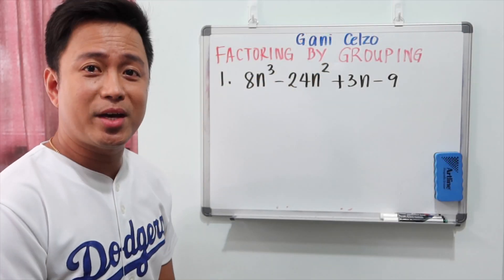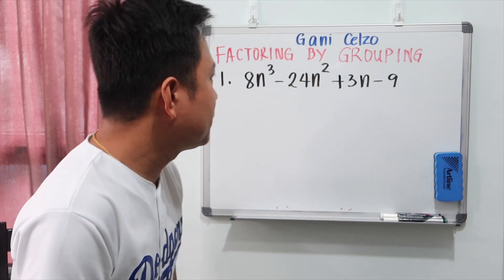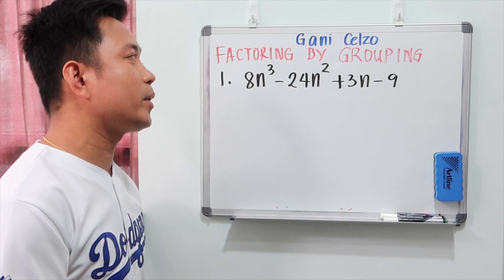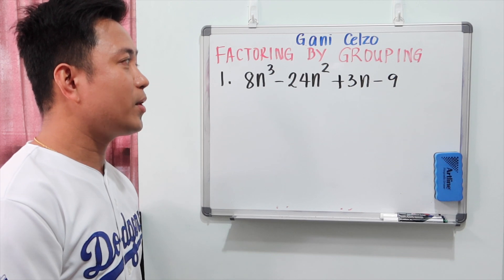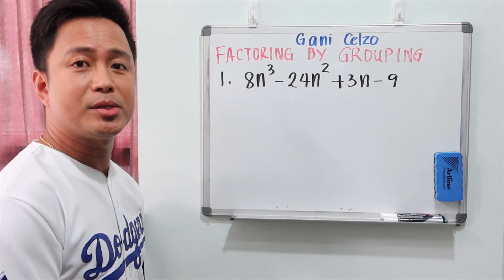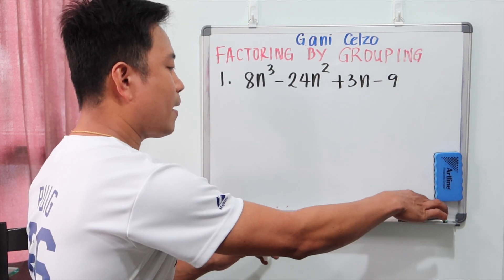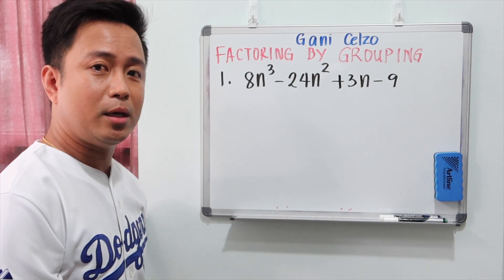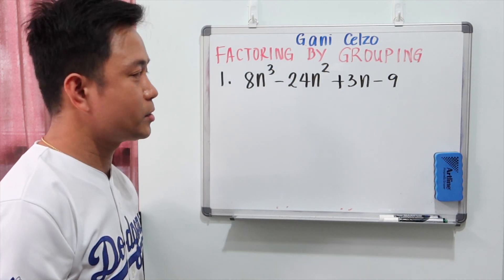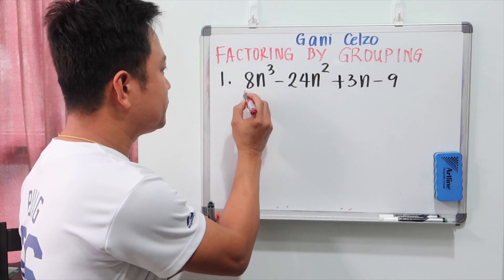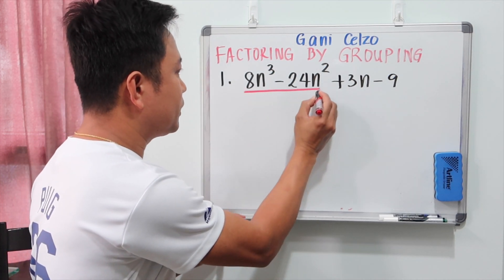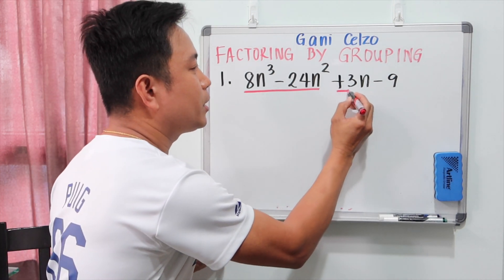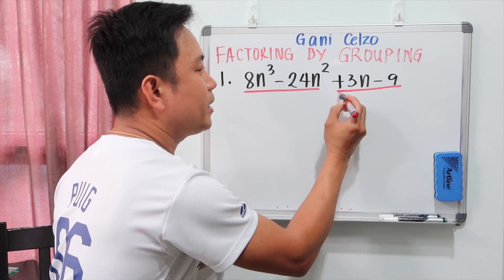So let's take a look at this first example. We have 8n to the third minus 24n squared plus 3n minus 9. The first step is to group this polynomial into two groups. I will have the first two terms as my first group and the last two terms as my second group.